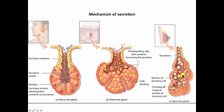With apocrine glands, the apical plasma membrane pinches off and contains the product in a vesicle which is then secreted onto the surface of the epithelium or, in the case of the breast, is stored in the ducts of the breast until the stimulus arrives to allow the milk to be let down, and this occurs during suckling.